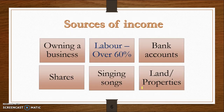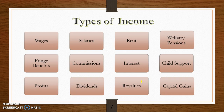Income can come from a whole range of sources: owning a business and the profit from running it, providing labour to earn a salary or wage, interest on your bank account, dividends on shares, royalties from singing songs, and rent from land or properties. We're going to talk about each of these different forms of income, including wages, salaries, rent, government payments, fringe benefits, commission, interest, child support, profits, dividends, royalties, and capital gains.